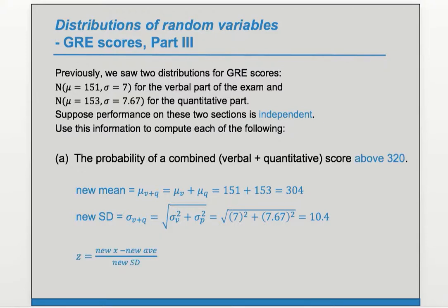Now we can find a z-score for this score of 320. So we're going to have our new x of interest minus the new mean that we just computed divided by the new SD. So that's going to be 320 minus 304 over 10.4 which gives us 1.53.